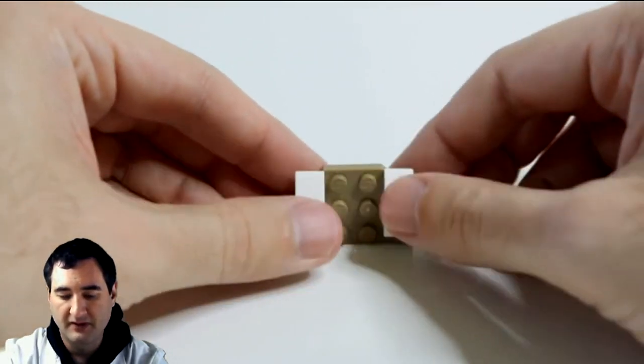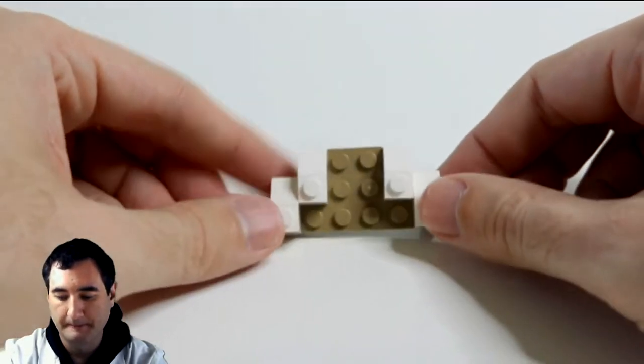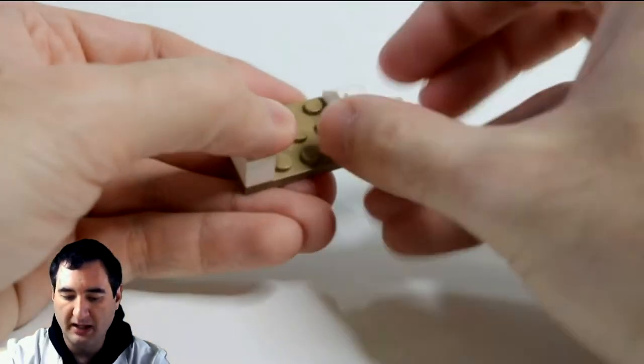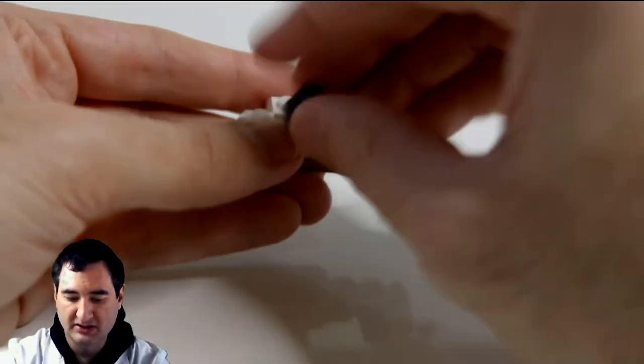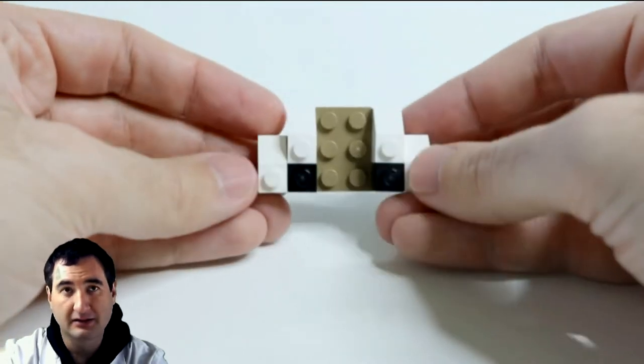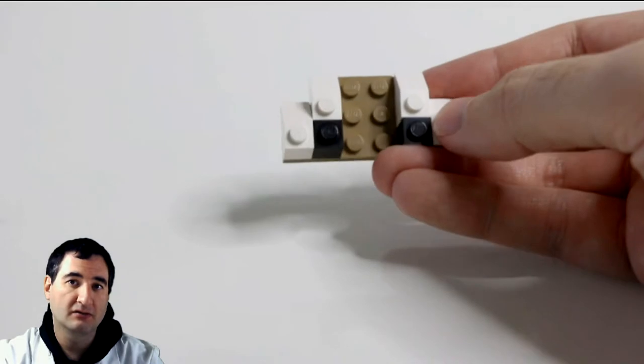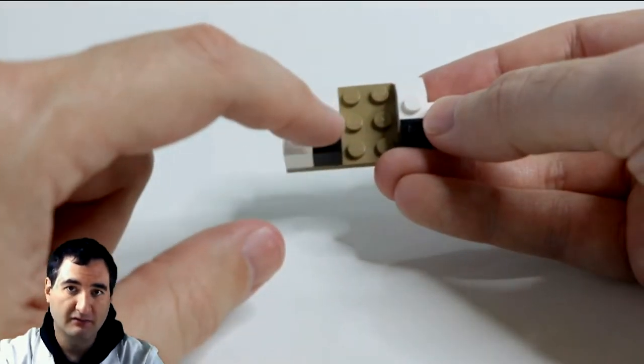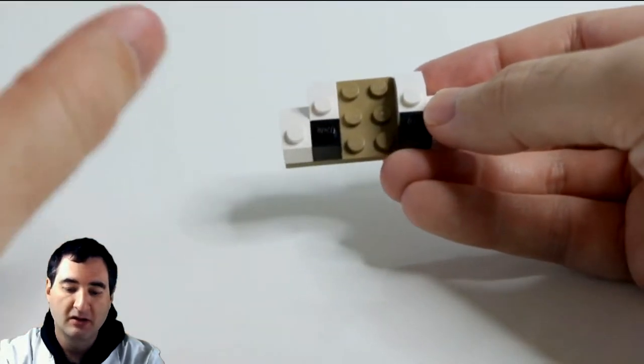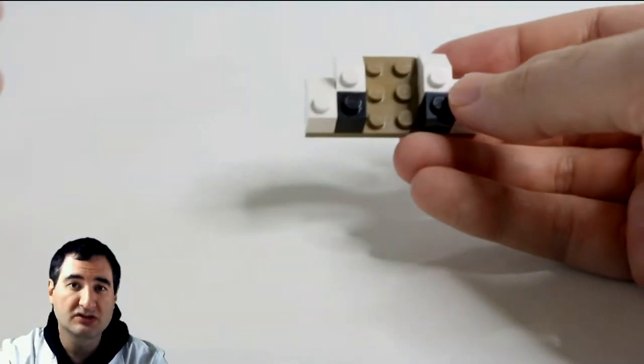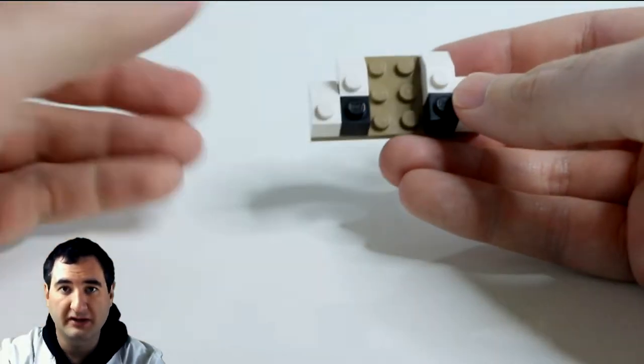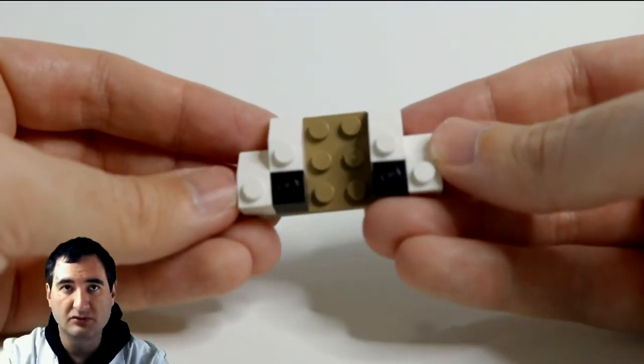We're going to use one by one bricks - black - because you want this change of color between the brown of the turkey to the black of the feather to the white of the feather. A lot of the cartoons have black to white feathers, so that's what I'm using for this build.